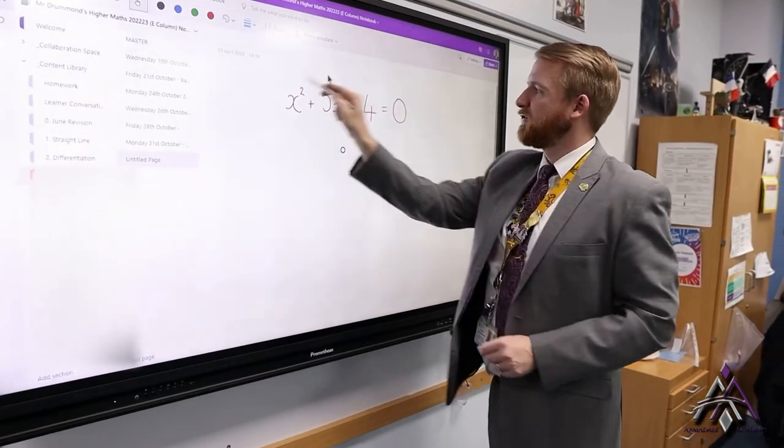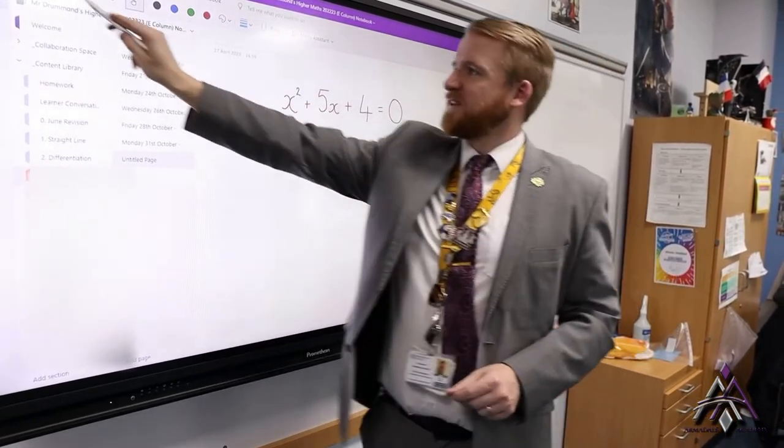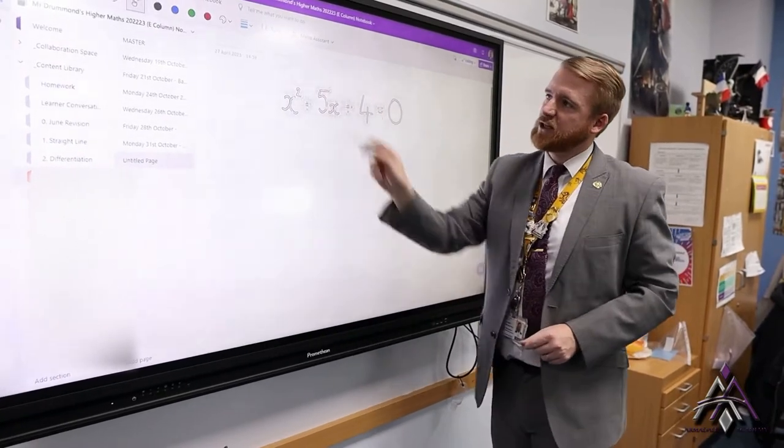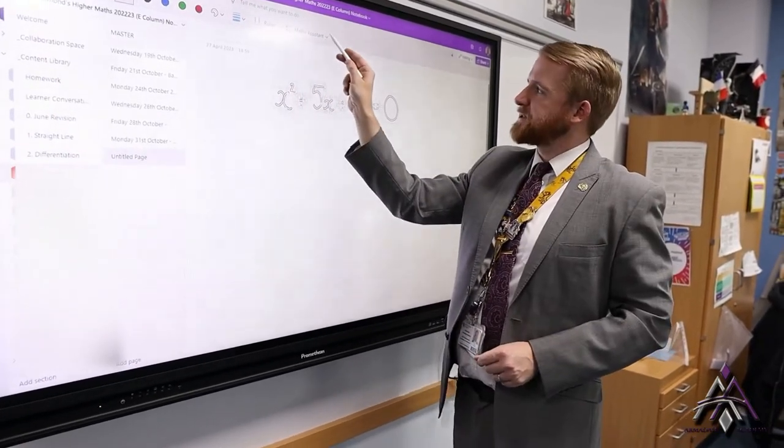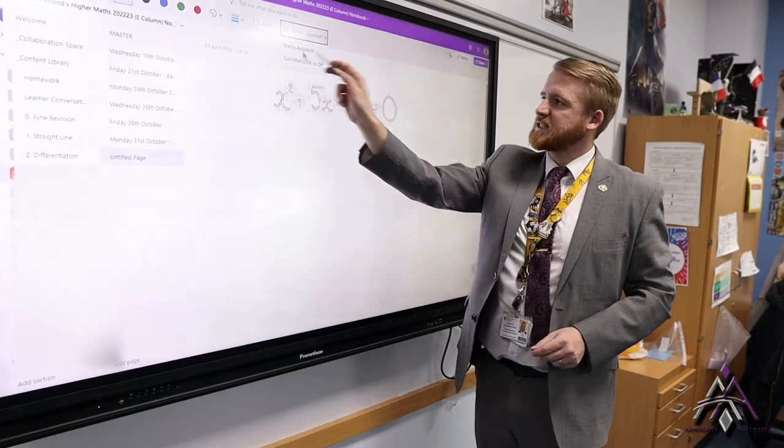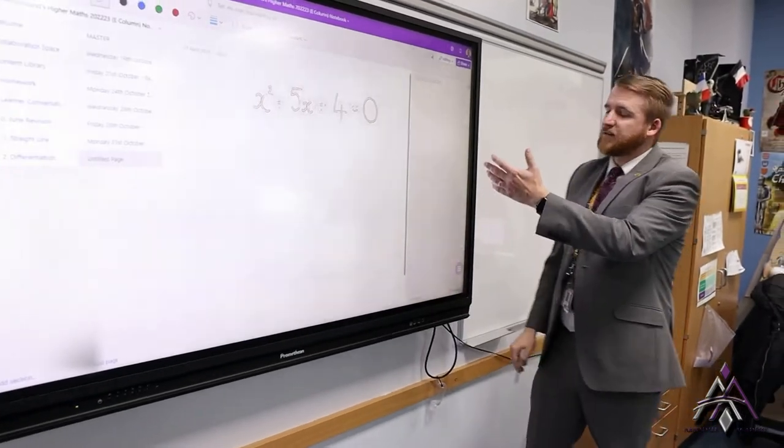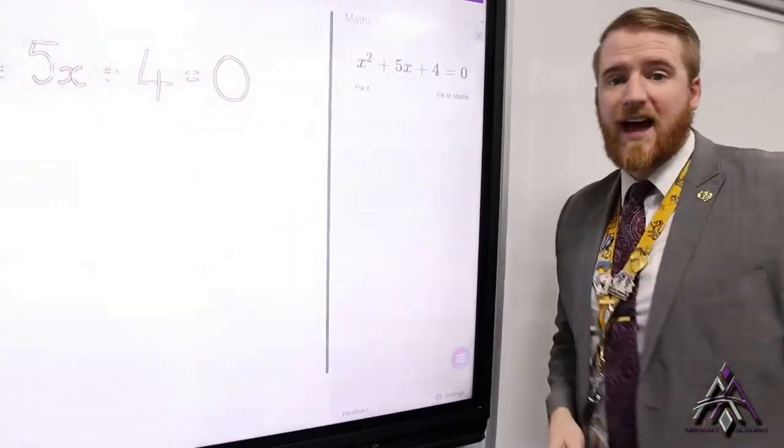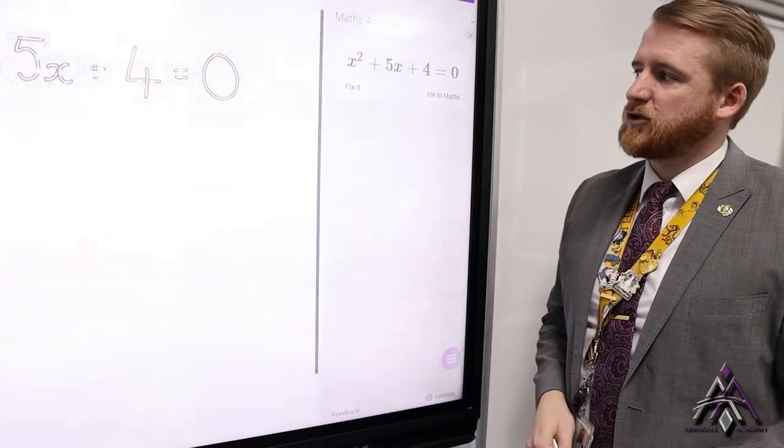All we have to do is we have to select our item. There we go, we've selected our item here and then you can see under the draw there's this maths assistant. If we click on maths assistant we'll open up this side view here and it will come up with the equation or what it's interpreting as the equation using the ink.